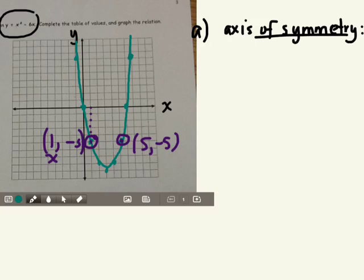So I need to know what the halfway point is between these two x values. So 1 plus 5, midpoint, we divide by 2. 6 divided by 2 equals 3.